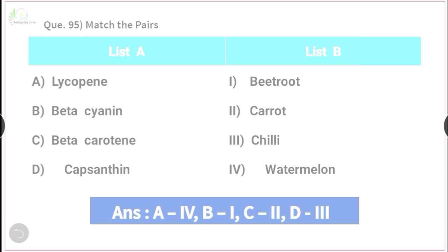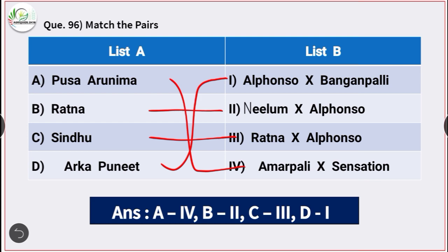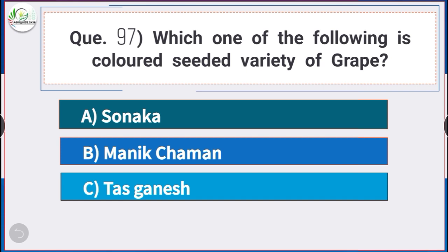Question number 96: Match the following. Pusa Arunima is a cross between Amrapali and Sensation. Ratna is a cross between Neelam and Alphonso. Sindhu is a cross between Ratna and Alphonso. And Arka Puneet is the cross between Alphonso and Banganapalli.